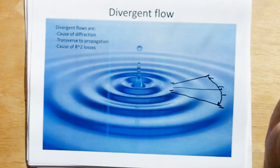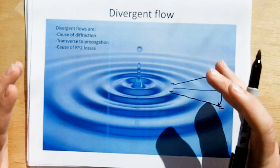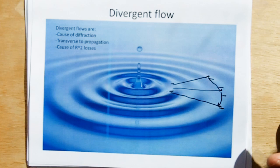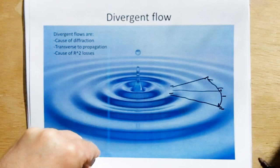And that's the reason why the energy in these rings get smaller and smaller per unit length as the rings expand. This is the cause of diffraction. It's also the cause of R squared losses, which we discussed in the earlier videos. And we need divergence of the medium to explain that.